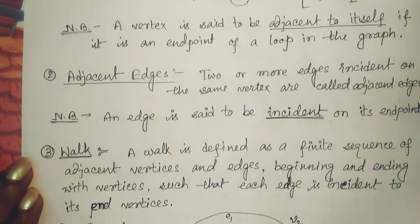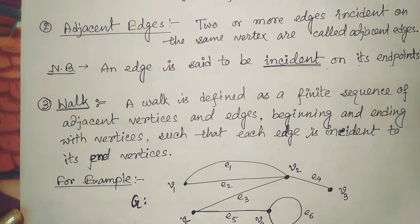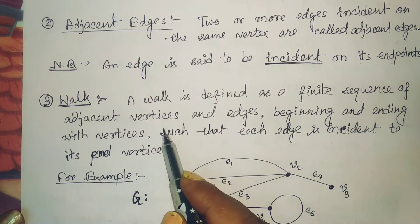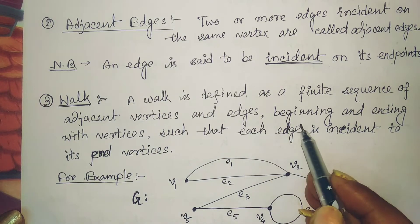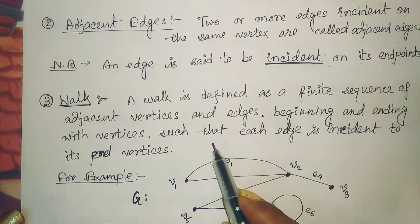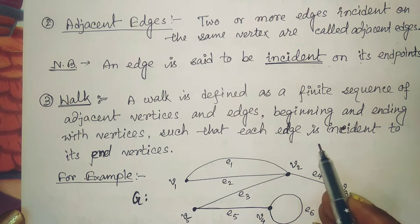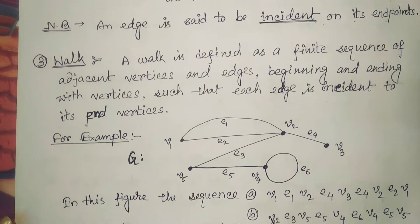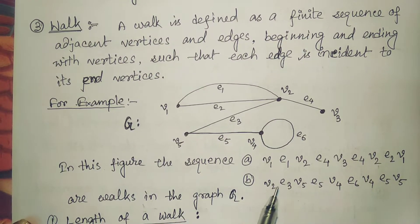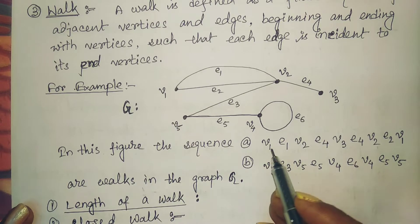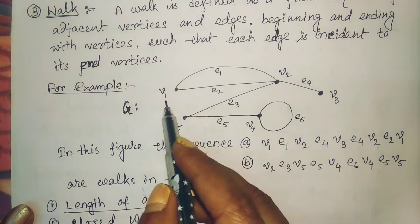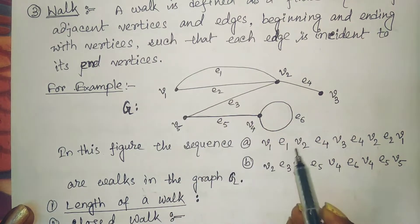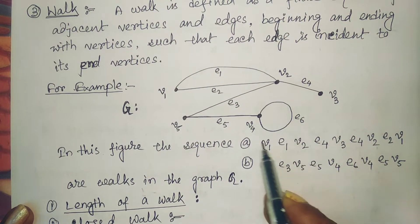A walk is defined as a finite sequence of adjacent vertices and edges, beginning and ending with vertices, such that each edge is incident to its end vertices. In this example graph, five vertices v1, v2, v3, v4, v5 are given; e1 and e2 are parallel edges, and e6 is a self-loop.